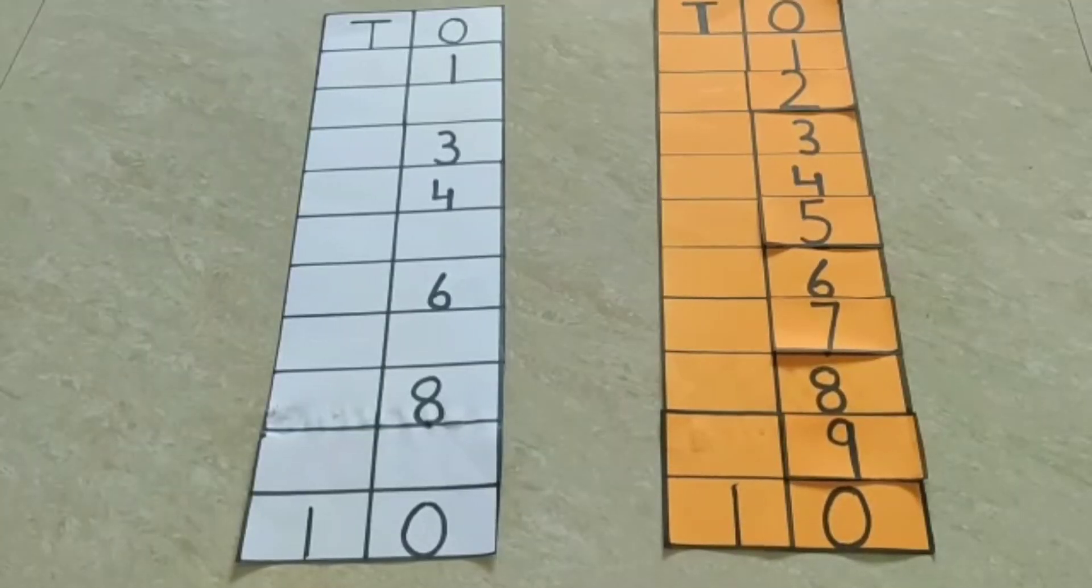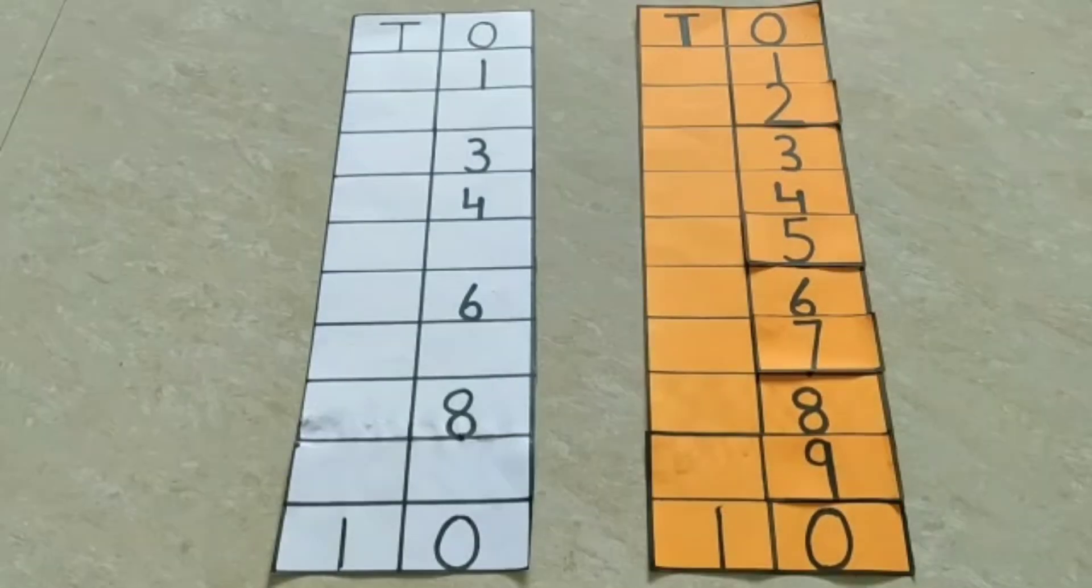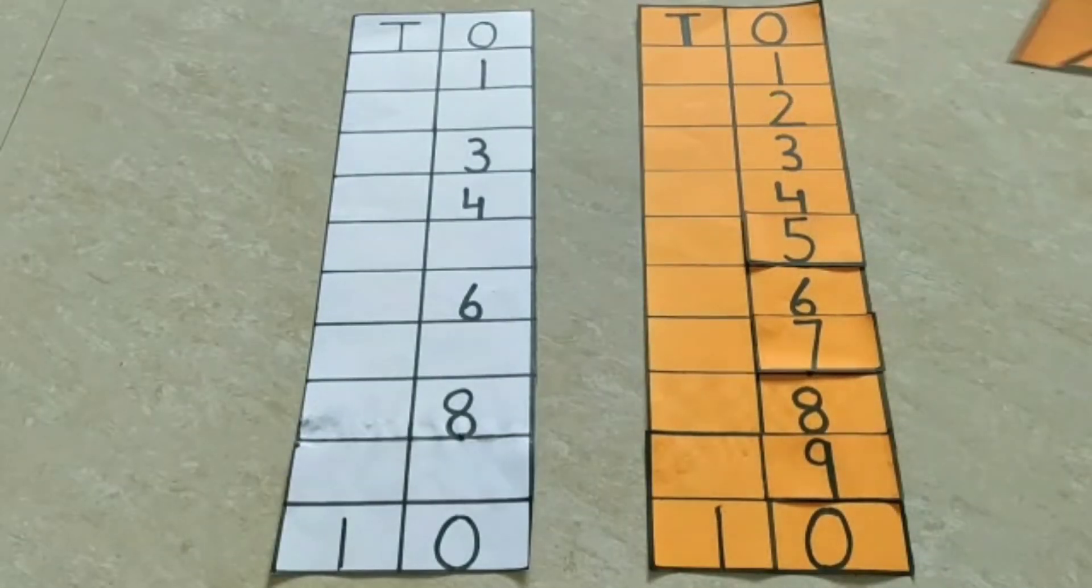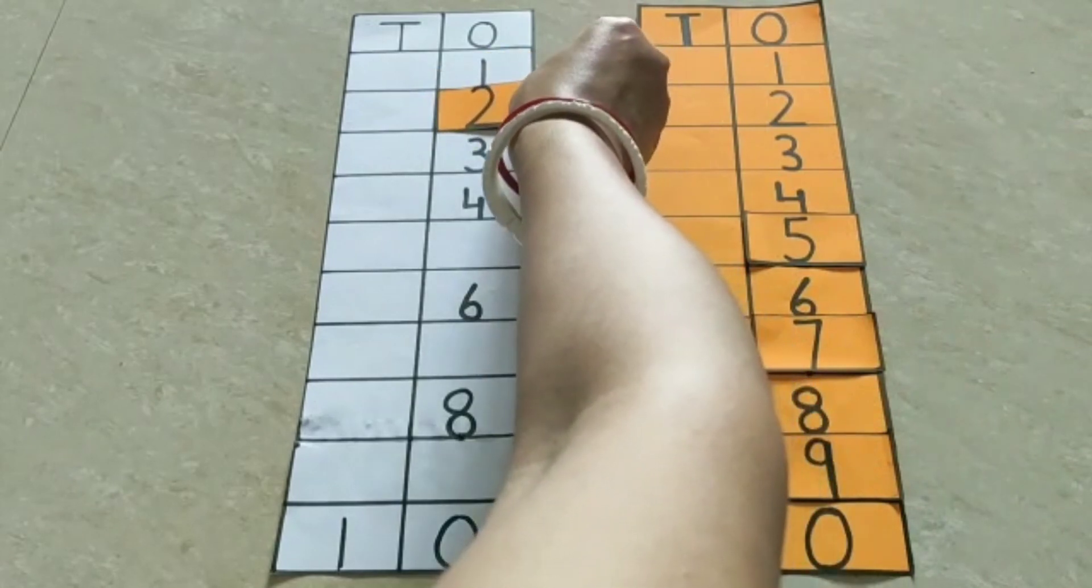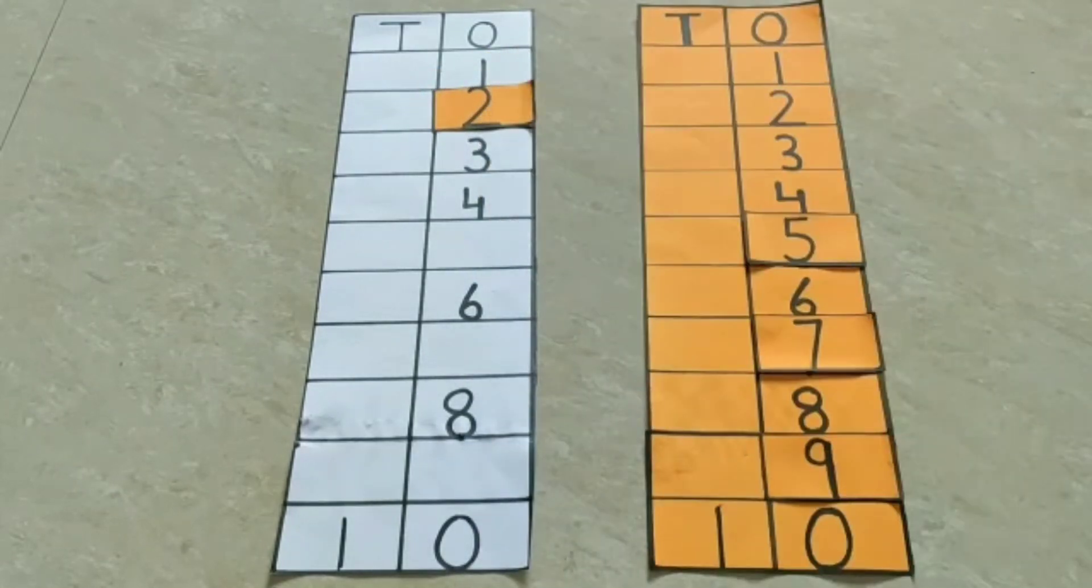So let's find out which is the next number. So we pick this card and keep it here. So which number is this? This is number 2. 1, 2, 3, 4.